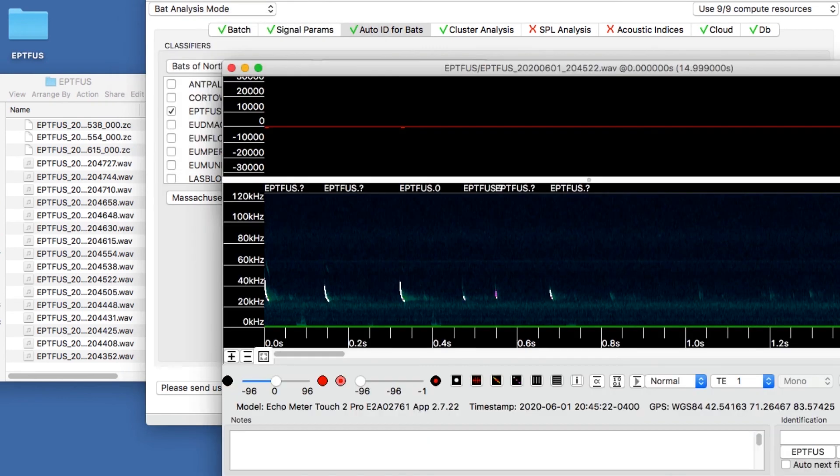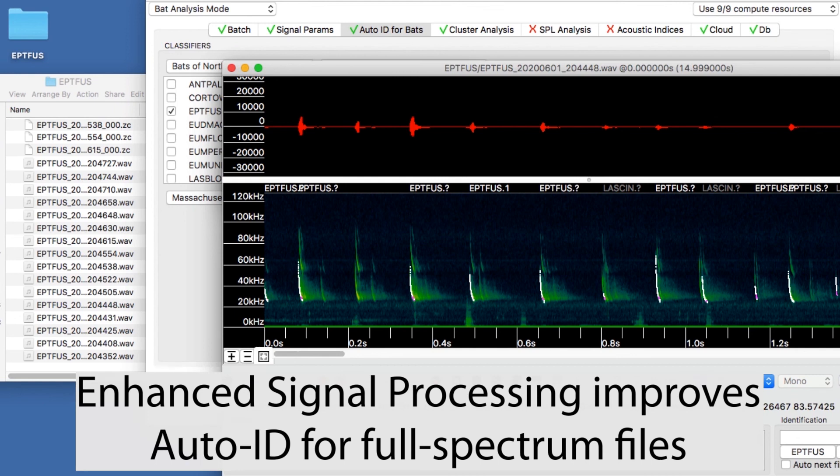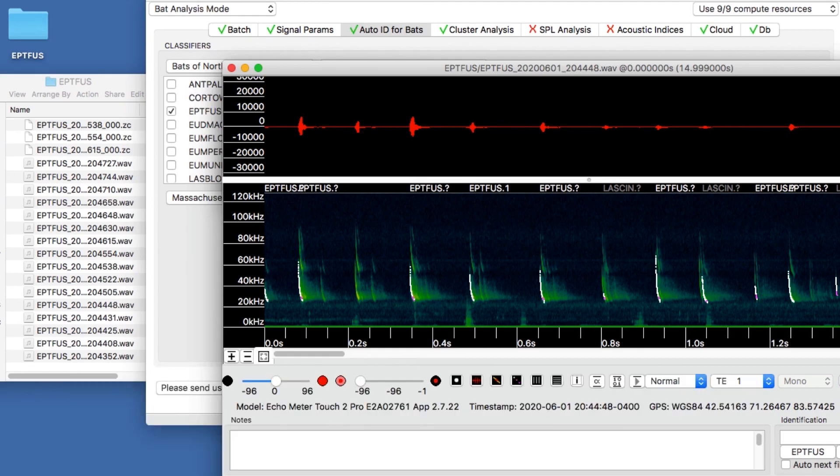When full spectrum files are used for auto-ID inputs, Kaleidoscope Pro can apply the enhanced signal processing to get the best possible zero crossing representations and therefore the best auto-ID results. Thank you for watching.